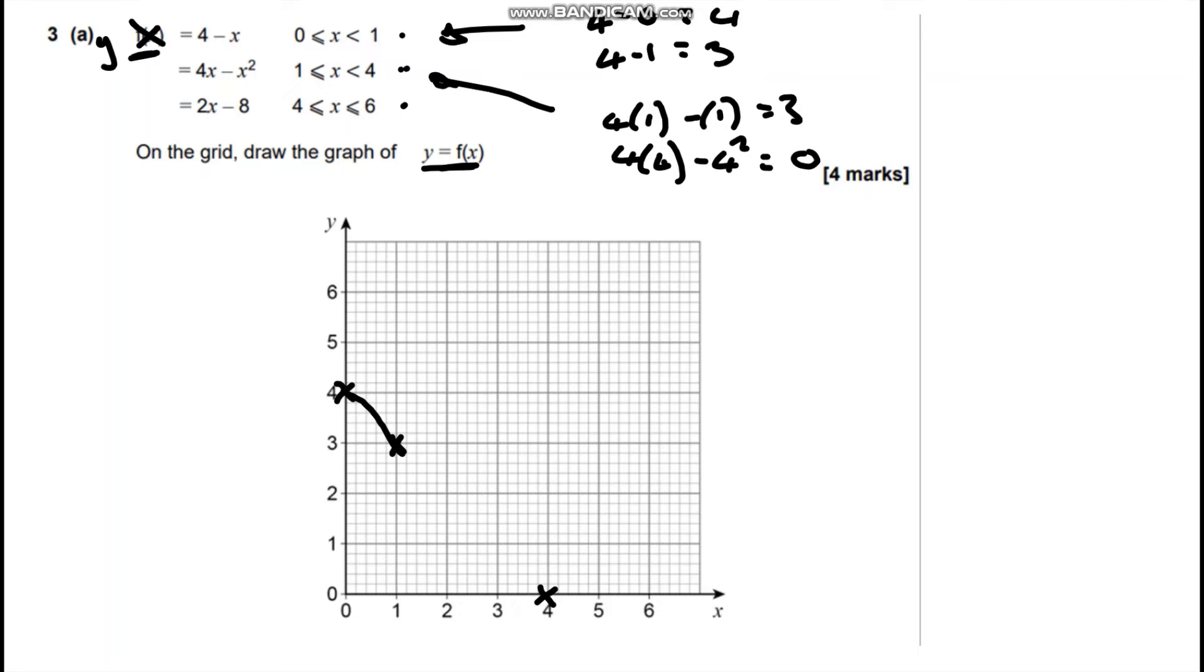Now the problem with this part of the graph is it's a quadratic, negative quadratic, so it's going to look something like that. But we need to know where this maximum point is, so we're going to have to do a little bit more working out for this.